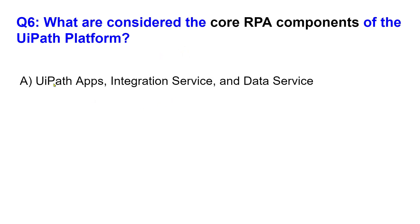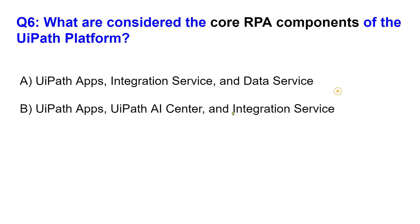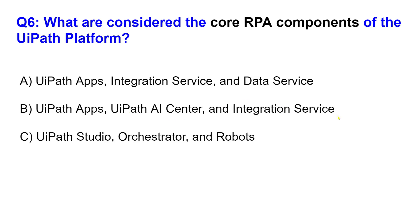Here are your options. Option A: UiPath Apps, Integration Service, Data Service. Option B: UiPath Apps — these are the different products — UiPath AI Center, Integration Service.